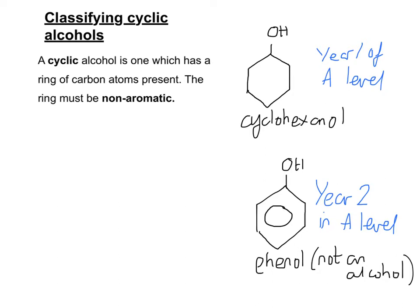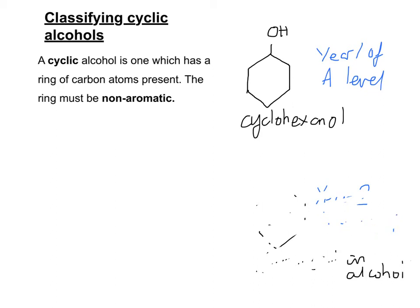So I'm going to rub this out and we're going to concentrate on cyclohexanol. Now, you can clearly see the OH group attached directly to the ring. So it's important to have a think about whether that's a primary, a secondary, or a tertiary alcohol.